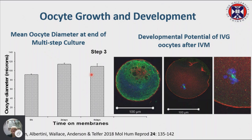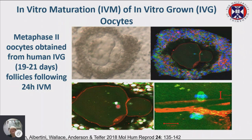We take these oocytes from the membranes and place them in vitro maturation media. After 24 hours we image them — these images have all been carried out by David Albertini. We get a mixed bag: some fragmentation, some M1 starting to form spindles and fragmenting. But in a proportion of them we can see metaphase 2 spindles forming and the production of a polar body. This is happening from primordial follicles grown all the way to the point where we matured them.